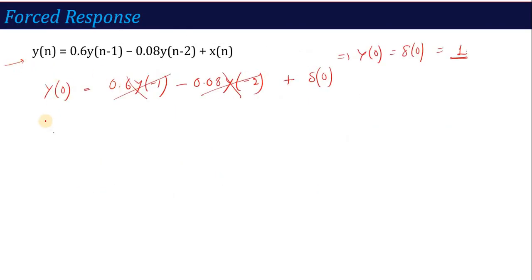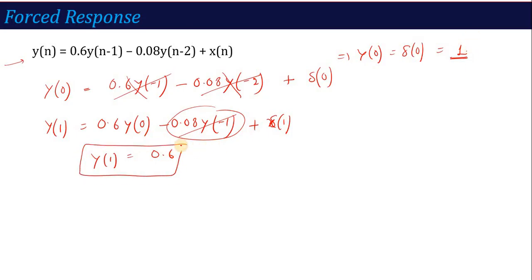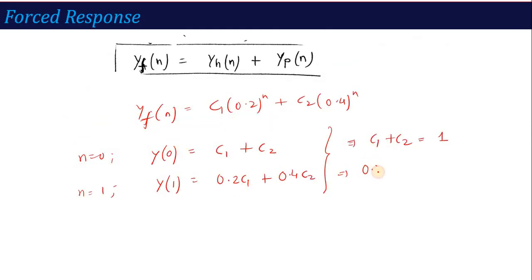Similarly, putting N = 1 in the difference equation: Y(1) = 0.6·Y(0) - 0.08·Y(-1) + delta(1). Since delta(1) = 0 and Y(-1) = 0, this simplifies to Y(1) = 0.6·Y(0) = 0.6·1 = 0.6. So our second equation becomes: 0.2·C₁ + 0.4·C₂ = 0.6.